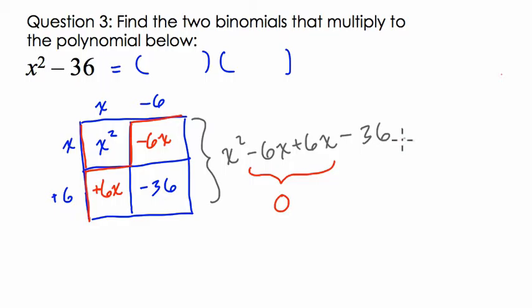And what remains, as you can see here, we have, we would have x squared minus 36, right? Which is our original binomial here.